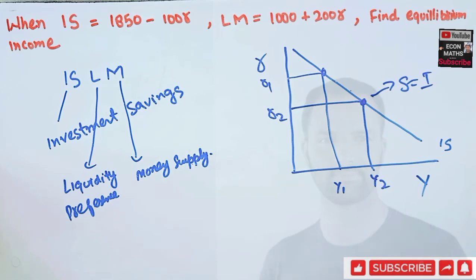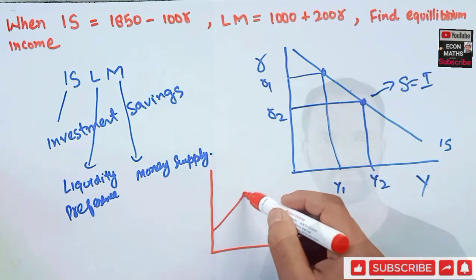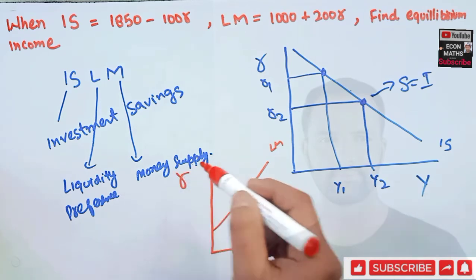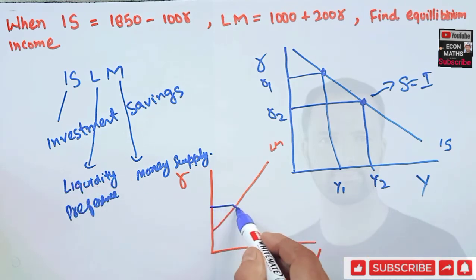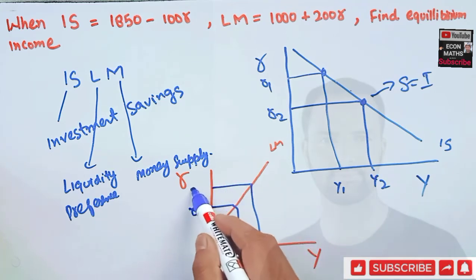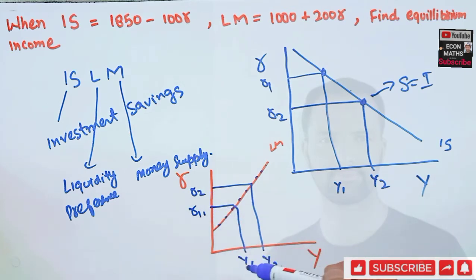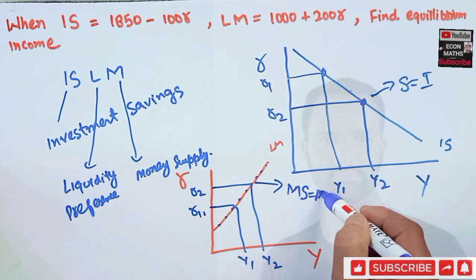So the IS curve shows different combinations of rate of interest and level of income where savings is equal to investment. Similarly, the LM curve has a positive slope. It shows different combinations of rate of interest — say R1 and Y1, R2 and Y2 — where money supply is equal to money demand.